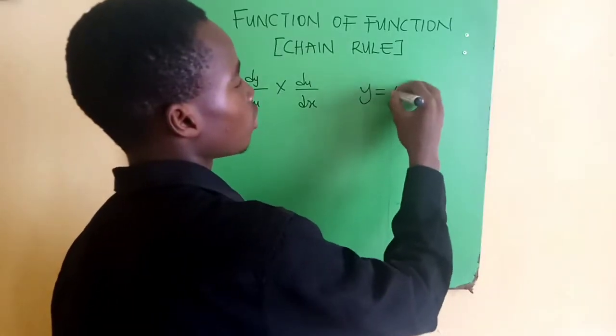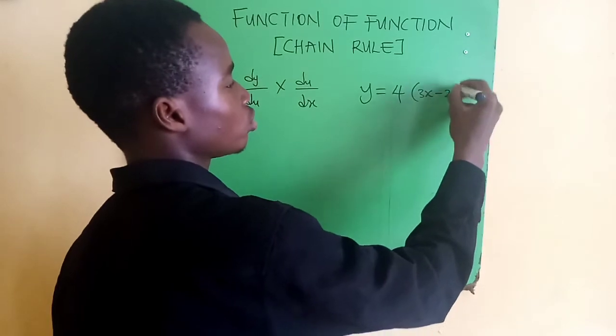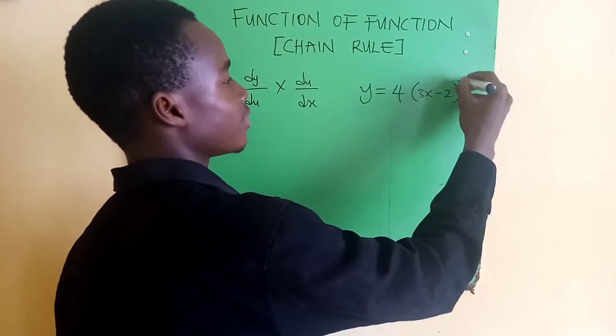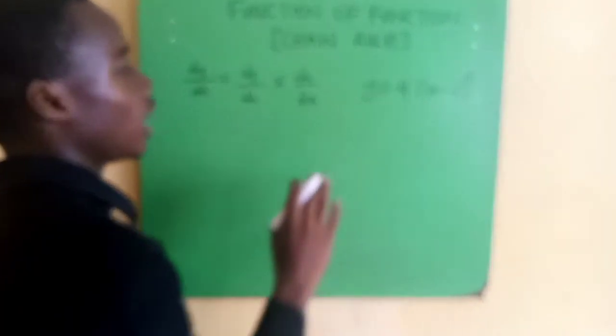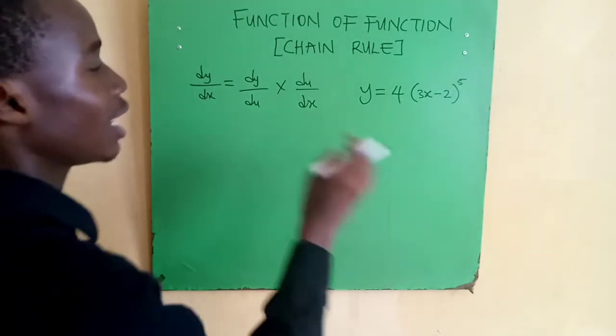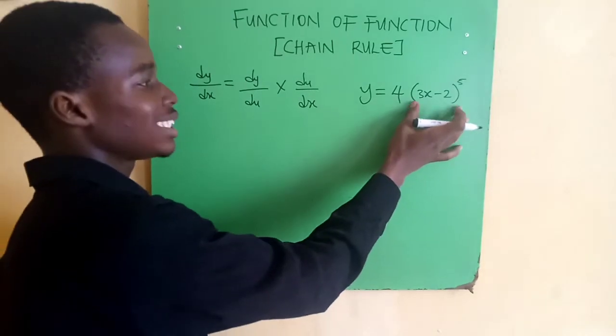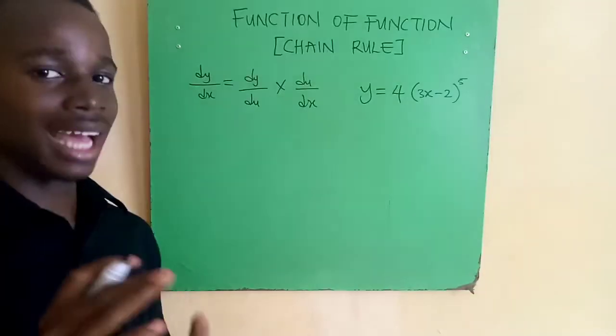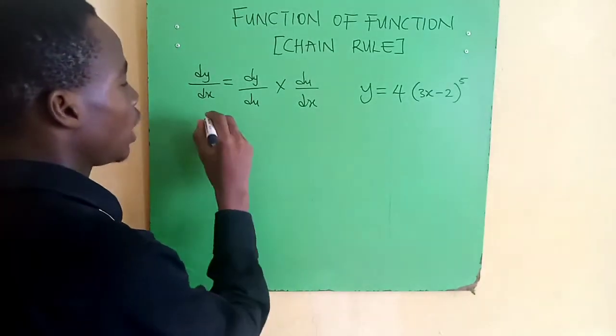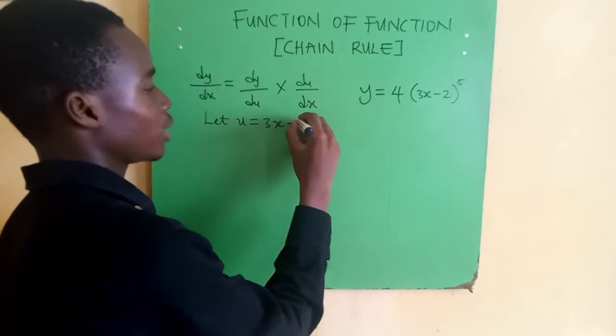We have this function, and the function of function rule tells us to first do substitution. This thing in bracket, 3x-2, we can substitute as u. So let u = 3x-2. Then our function y = 4u^5.